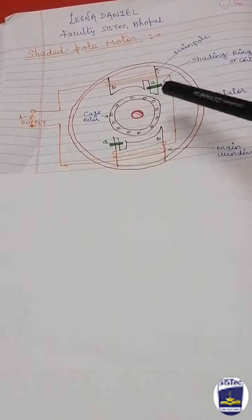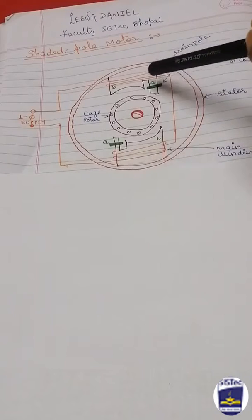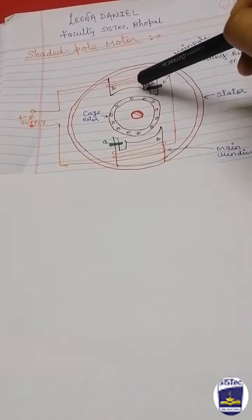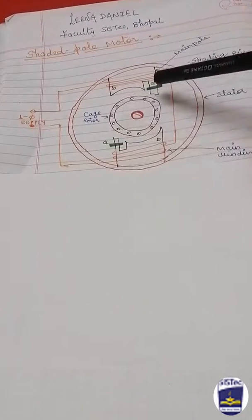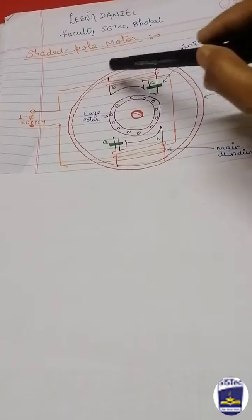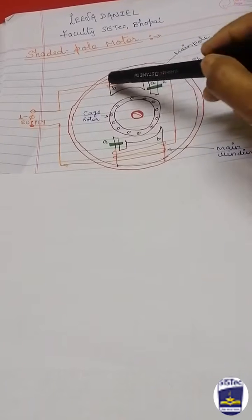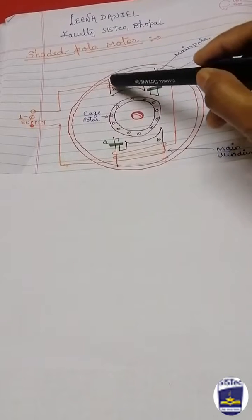Each pole is slotted on one side. You can see there is one slot in each pole. A copper ring is fitted on the smaller part. There are two parts: part A and part B. Part A is a smaller part, part B is a larger part. In the smaller part, a copper ring is fitted.